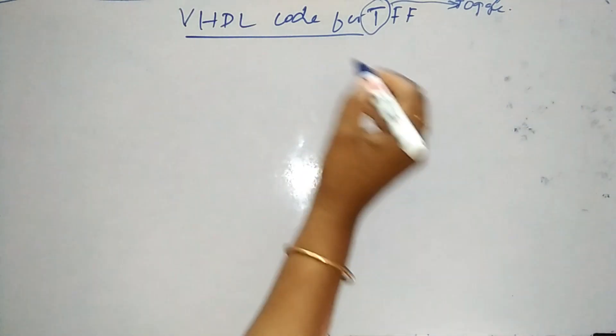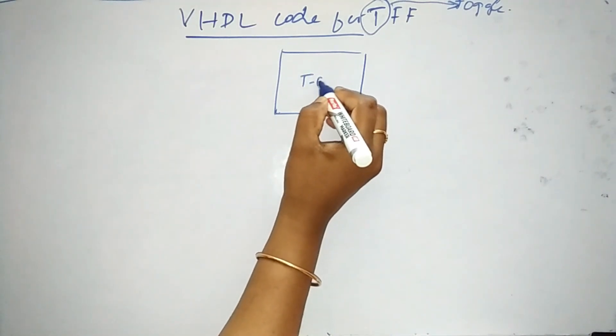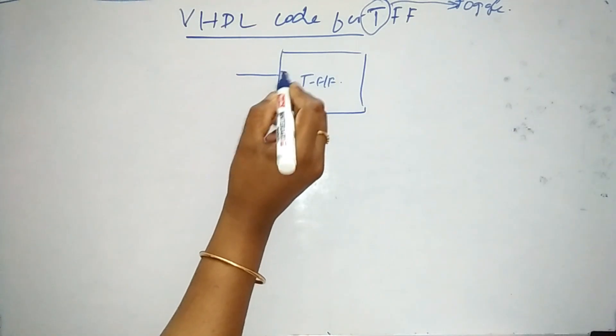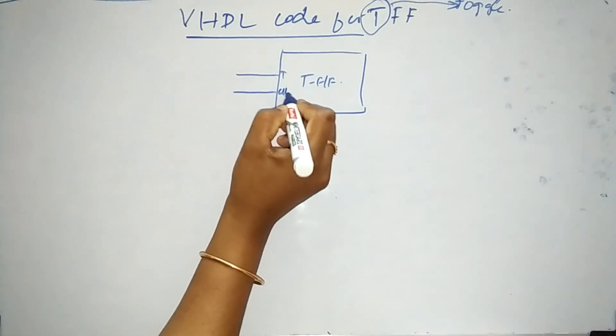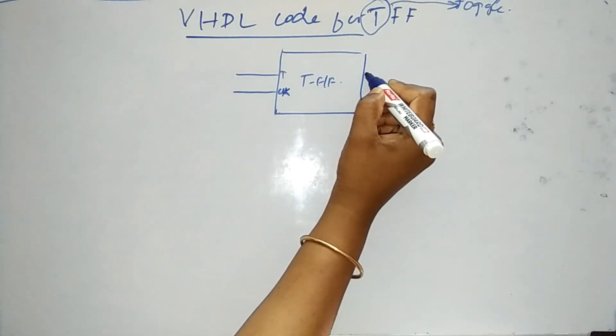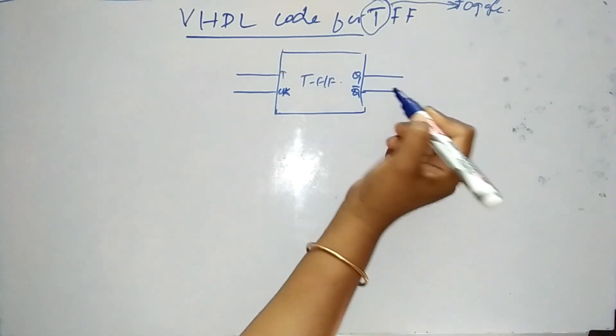Let me write for you all the basic inputs and the outputs of the T-flip-flop. So we know that T is our input and clock, there will be a clock for the flip-flop and the output is Q, Q-bar.